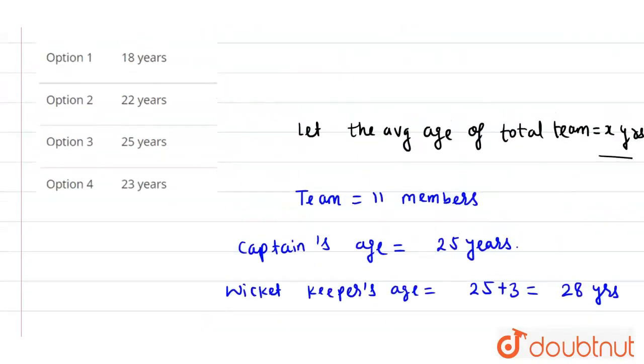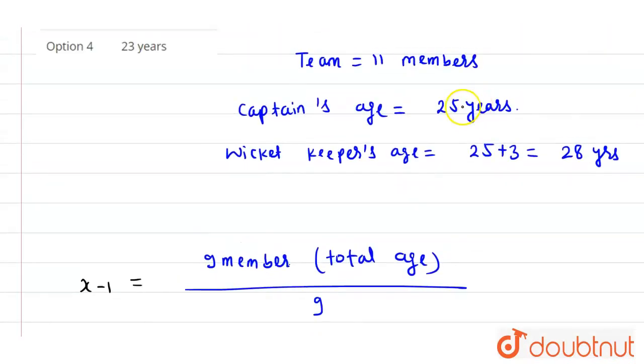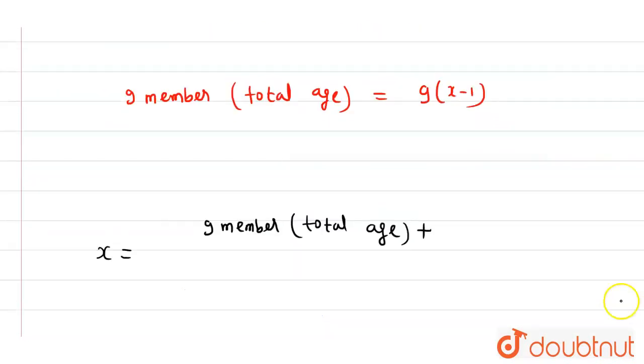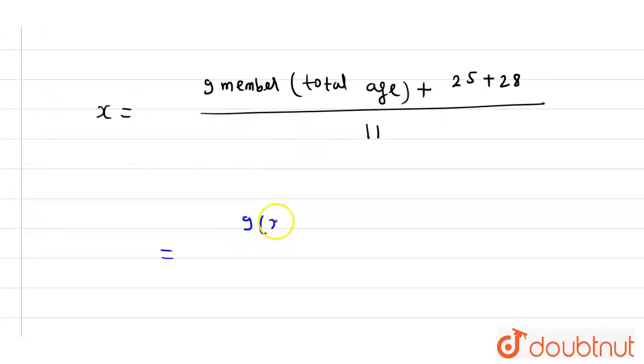The total team includes the 9 members' total age plus the wicket keeper and captain, which is 25 and 28, divided by 11 members. So we have 9 into x minus 1 plus 25 plus 28 divided by 11 equals x.